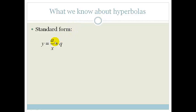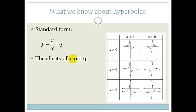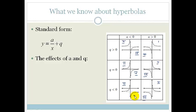So far, the standard form that we have is y = a/x + q. This tells us the following: if your 'a' is positive, then we're in quadrants 1 and 3. If your 'a' is negative, we're in quadrants 2 and 4.